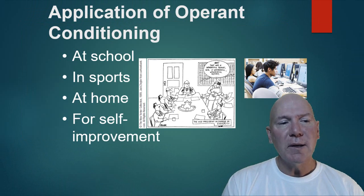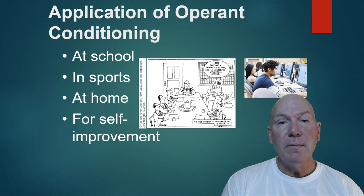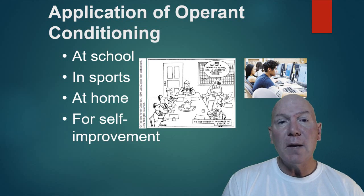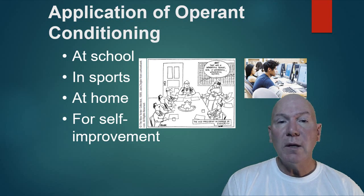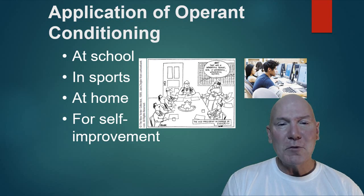Moving on to applications of operant conditioning — we use it at school, in sports, at home, and for self-improvement. At school, behaviorists dreamed of immediate feedback, and now online quizzes provide automatic scoring. Teachers give feedback through summative assessments like tests or by simply confirming correct understanding. In sports, shaping can be used — teaching someone to putt by starting with short putts and gradually moving back, reinforced by seeing the ball go in.